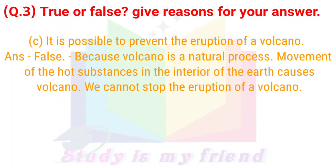C) It is possible to prevent the eruption of a volcano. Answer: False. Because a volcano is a natural process — movement of hot substances in the interior of the earth causes a volcano. We cannot stop the eruption of a volcano.